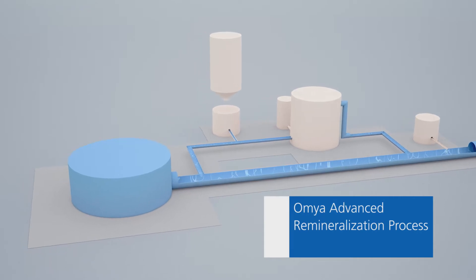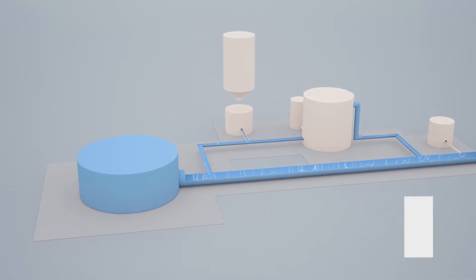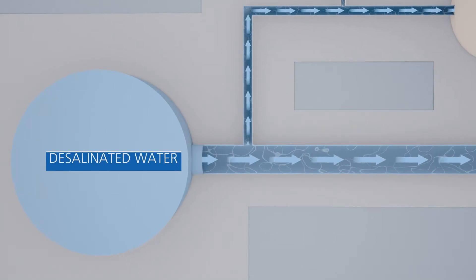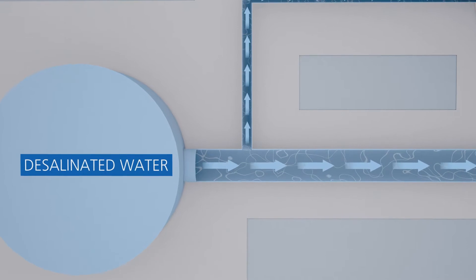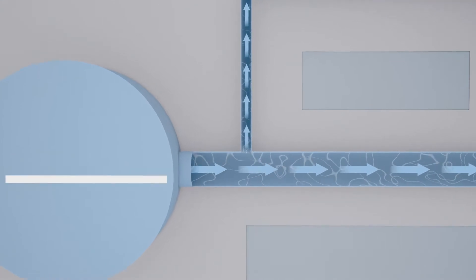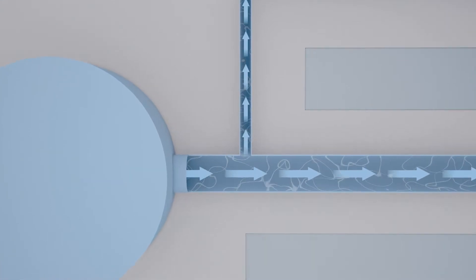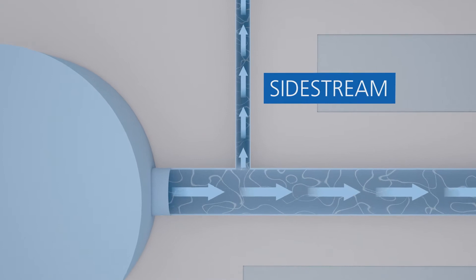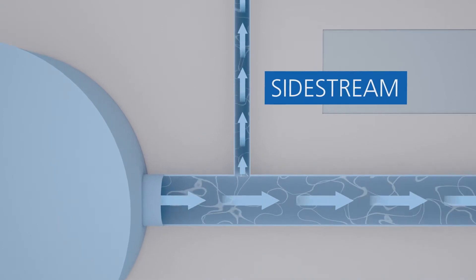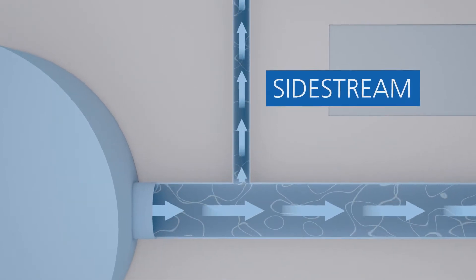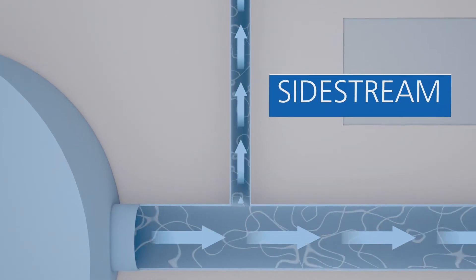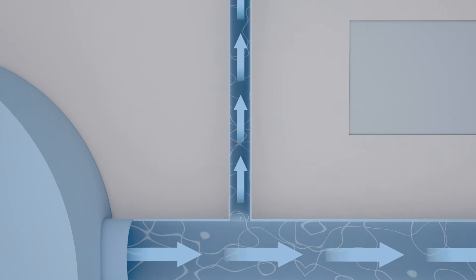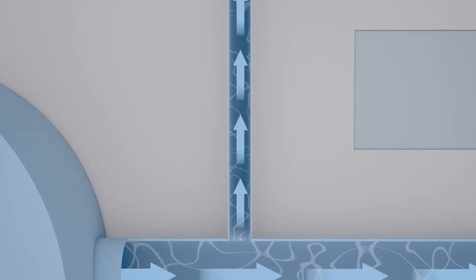For the remineralization process, the desalinated water is divided into two streams: a mainstream and a sidestream. The volume of the sidestream treated by the Omya Advanced Remineralization Process depends on the required final water quality and CAPEX versus OPEX targets.